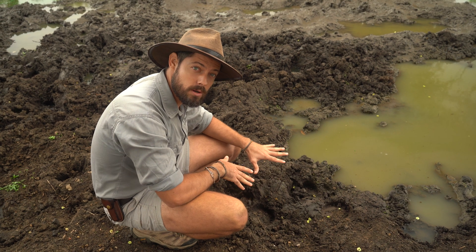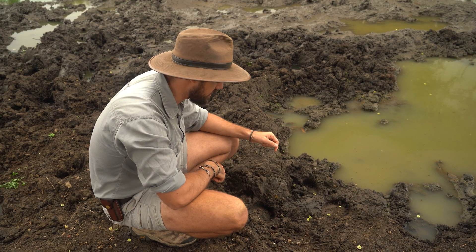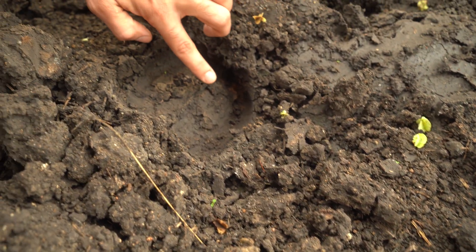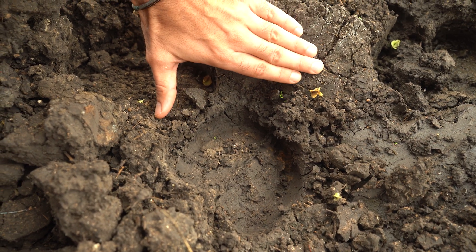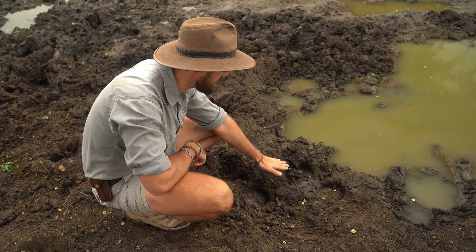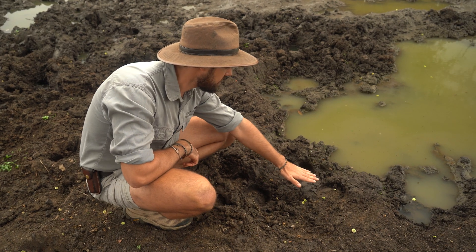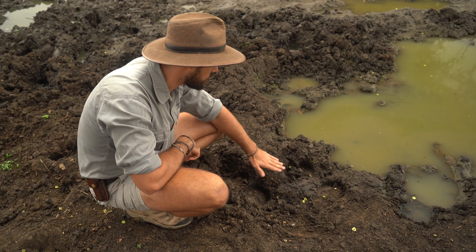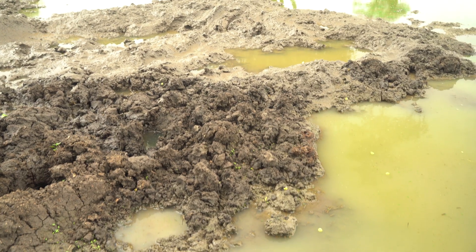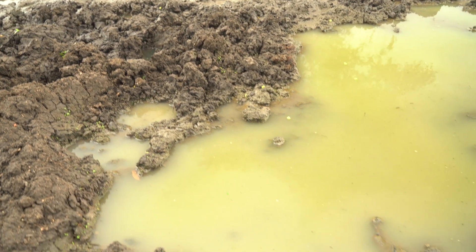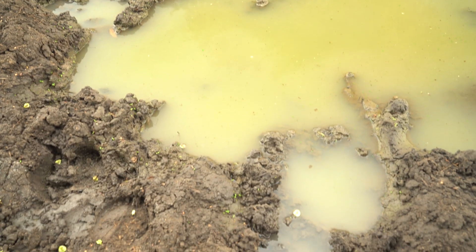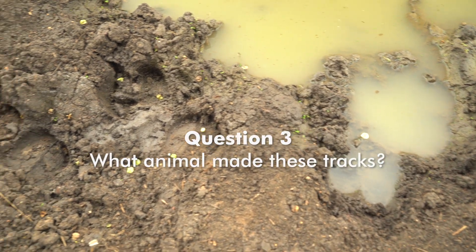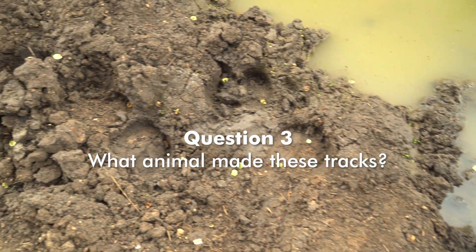Continuing with our story of what's happening at the dam, we found this beautiful big track here. You can see it's a track with two halves, and it sunk quite deeply at the edges of this water hole. There's more than one track — it's a big group of animals that came down. What animal made this track?